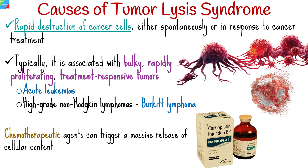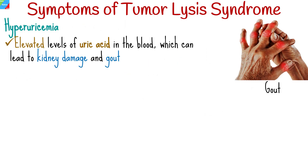Certain chemotherapeutic agents, particularly those used in aggressive cancer treatments, can trigger a massive release of cellular contents, contributing to Tumor Lysis Syndrome development. Tumor Lysis Syndrome manifests as a constellation of metabolic abnormalities, and its clinical presentation can vary.